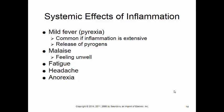Systemic means the whole body. Some systemic effects of inflammation include mild fever — pyrexia — when inflammation is throughout the body due to the release of pyrogens, which cause fever. Other systemic effects are malaise, which is a general feeling of being unwell, fatigue, headache, and anorexia or loss of appetite.